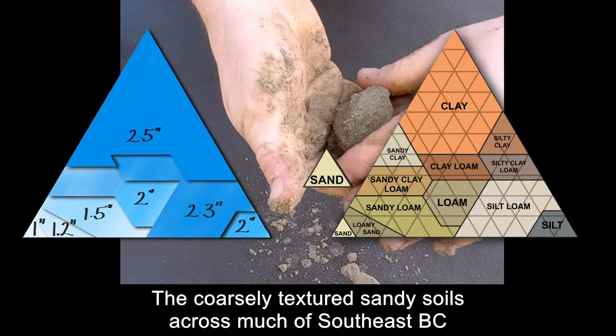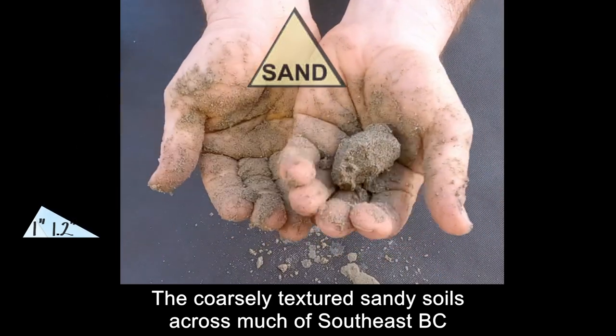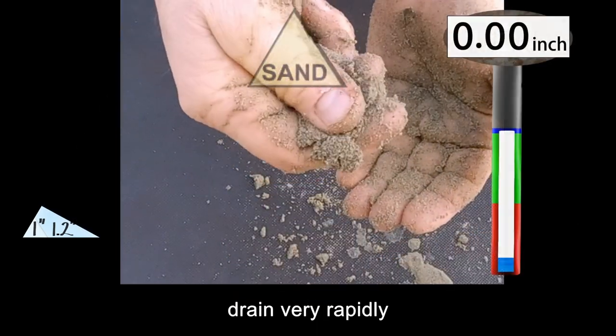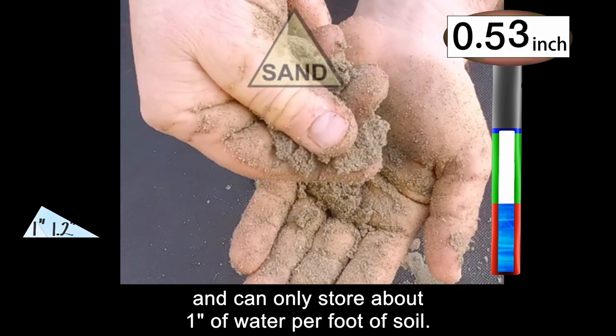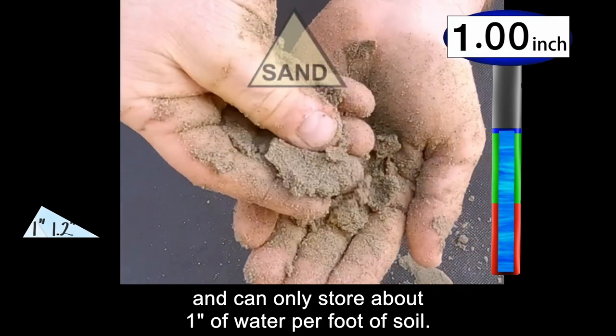The coarsely textured sandy soils across much of southeast BC drain very rapidly and can only store about 1 inch of water per foot of soil.